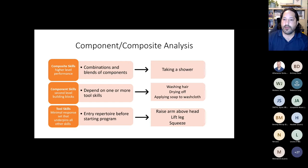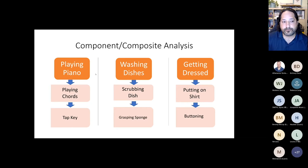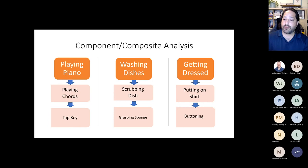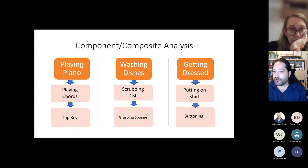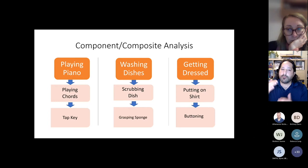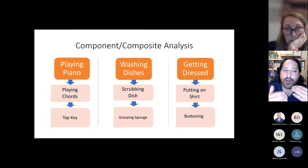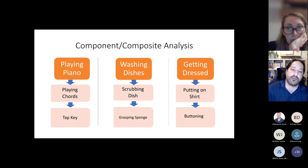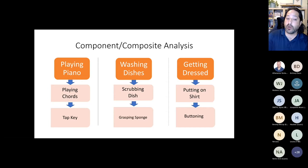Other examples: playing the piano is a composite; playing the chords is a component; tapping the key is a tool skill. Washing dishes is a composite; scrubbing the dishes is the component; grasping the sponge is a tool skill. Getting dressed is a composite; putting on a shirt is a component; buttoning is a tool skill. These aren't set in stone — they can be fluid. Depending on your goals with your learner, that determines where in this component-composite analysis you'll be working.